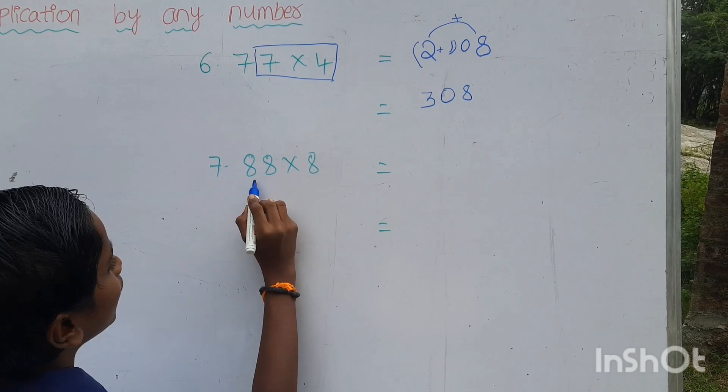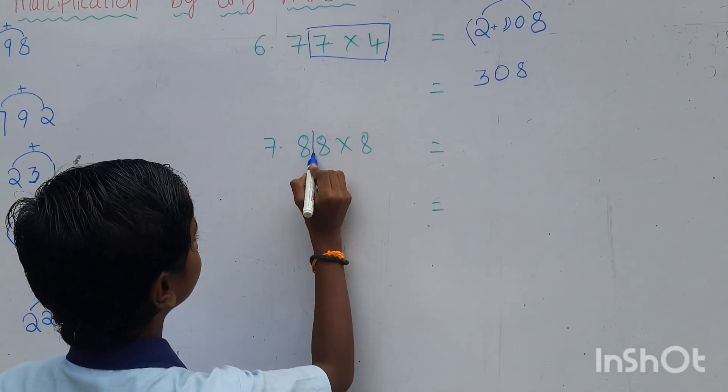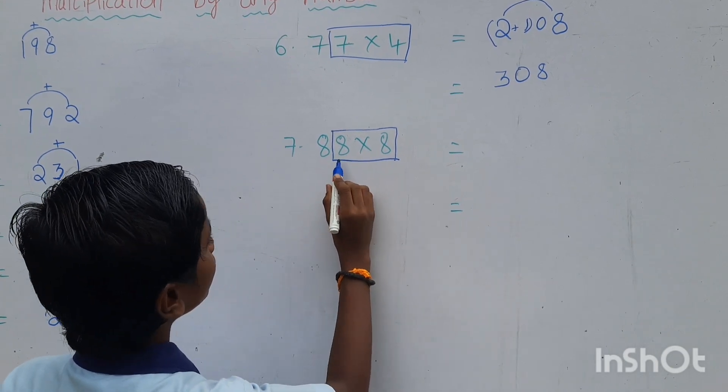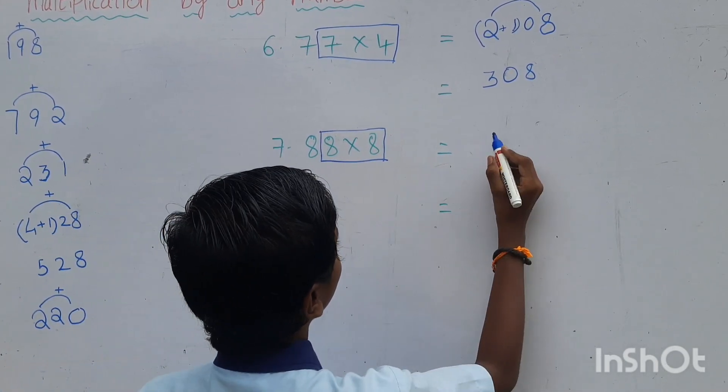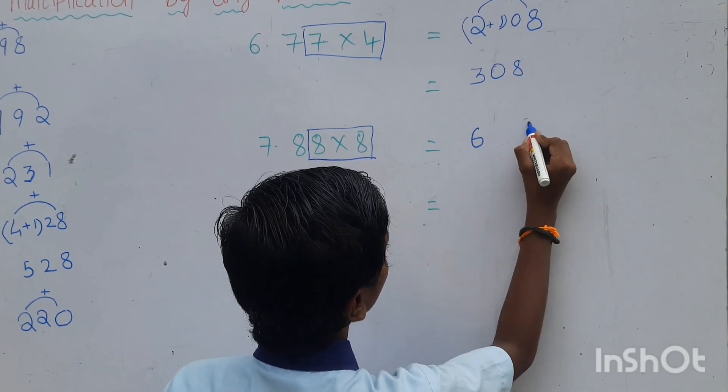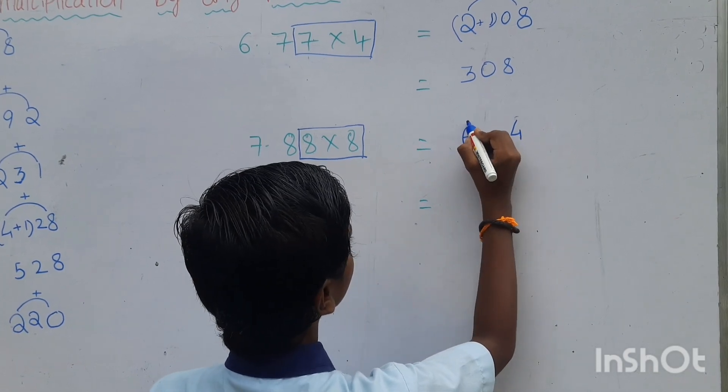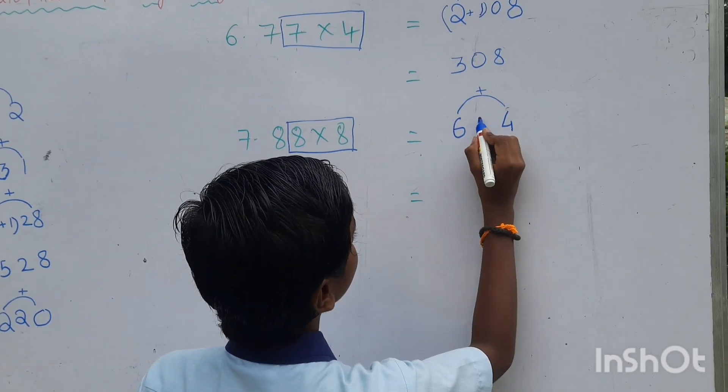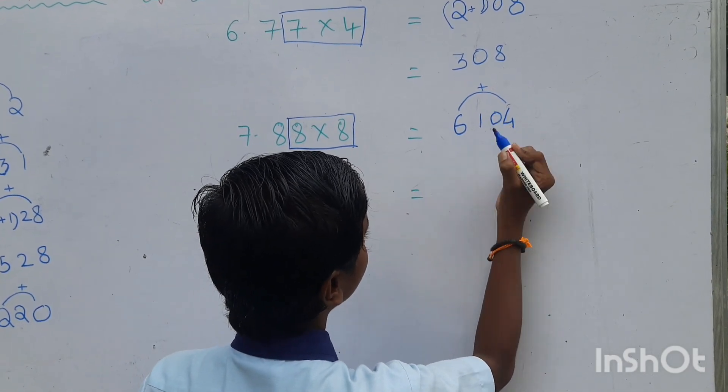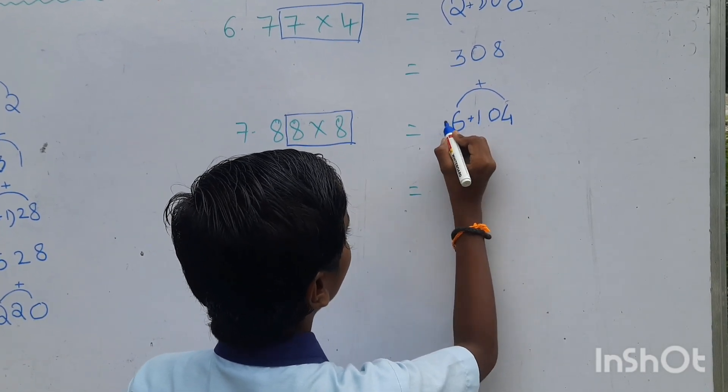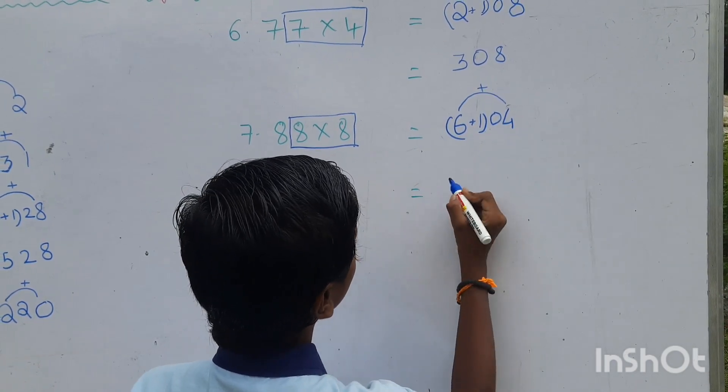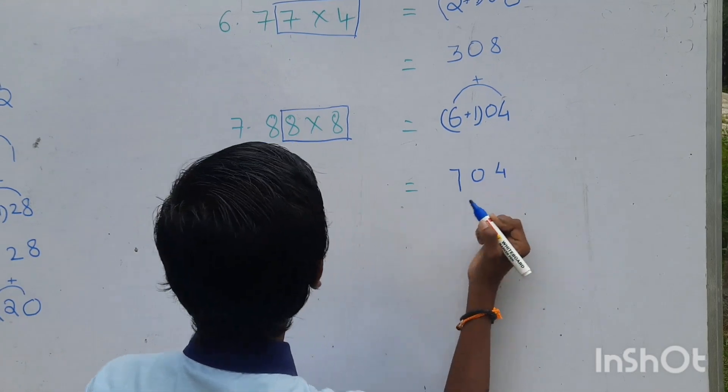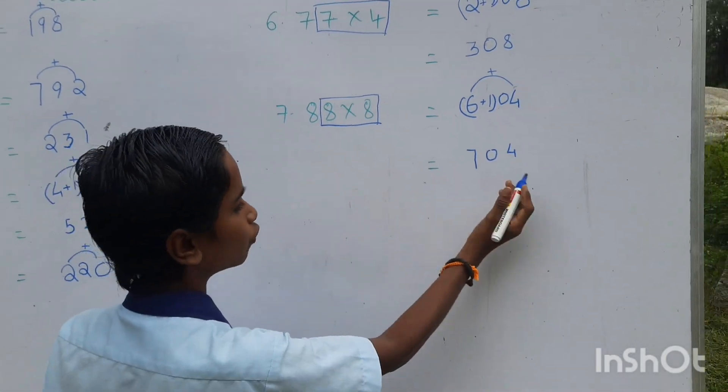Next one, 88 into 8. We want to multiply 8 into 8. 8 8s are 64. We want to add 6 and 4. 6 plus 4 equals to 10. We want to add 6 and 1. The answer is 704. 88 8s are 704.